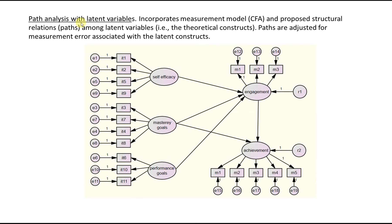This is an example of a path analysis using latent variables. It incorporates a measurement model — we could extend this to include all variables such as self-efficacy, mastery goals, performance goals, engagement, and achievement as latent constructs. There's a CFA model involved, and oftentimes that's the first step when working with path analysis with latent variables: generating a measurement model through confirmatory factor analysis, determining how well the indicators measure their respective latent constructs. Then we specify proposed causal associations among the latent variables themselves, reflecting the causal theory used to generate them.